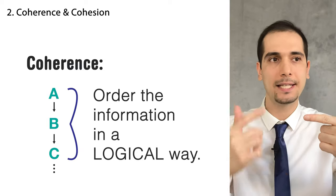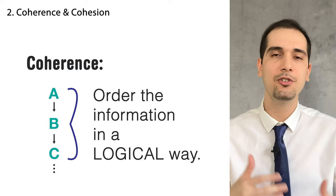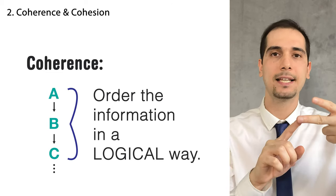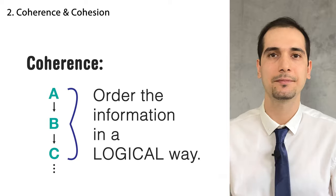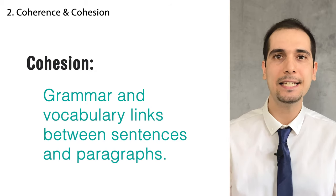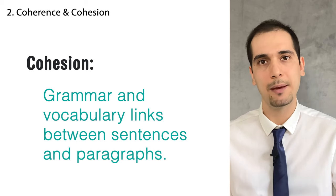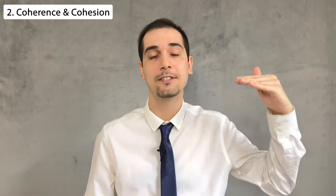The second criterion is coherence and cohesion. Coherence means sequencing and ordering your ideas in a logical way — so that A automatically and logically leads to B, B to C, C to D, and so on. Cohesion means the links and connections between sentences and paragraphs — it is more on a grammar and vocabulary level. So coherence is on the idea level, and cohesion is on the grammar and vocabulary level.